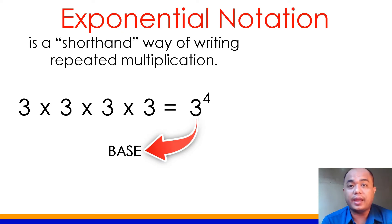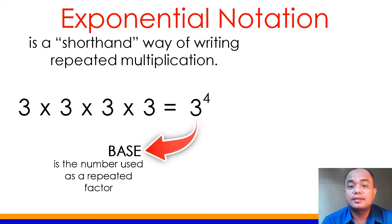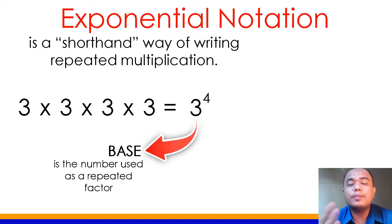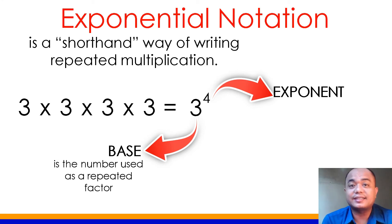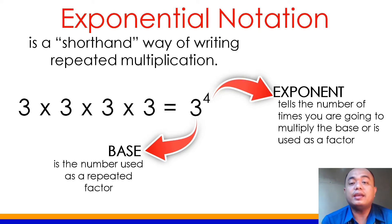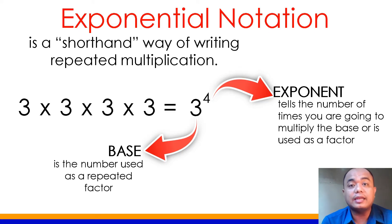Our 3 here is called the base. Base is the number used as repeated factor — it's the number that is repeatedly multiplied. In this case, the number 3 is multiplied 4 times. The exponent here is the number 4. The exponent tells the number of times you are going to multiply the base, or how many times it is used as a factor.